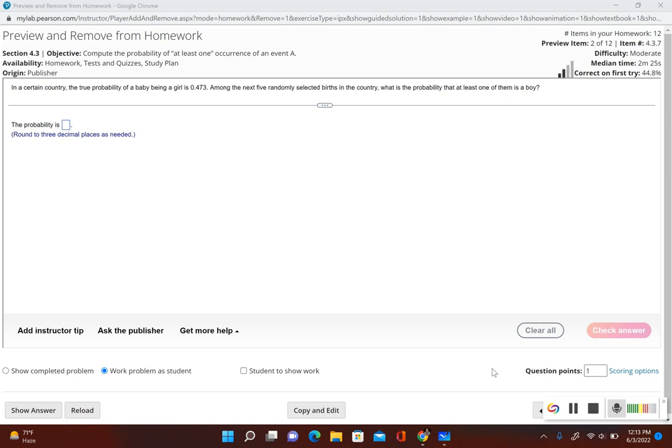So in order for us to find the probability that at least one of them is a boy, we first need to find the probability of the complement. The complement of at least one would be none. So we want to find out what's the probability of not having any boys. And then we use the rule for complementary events. Once we find the probability of no boys, we subtract that from one, and that'll give us the probability of at least one boy.